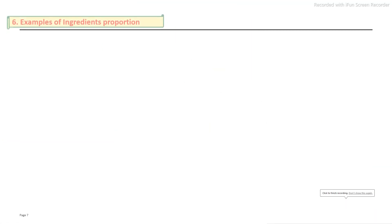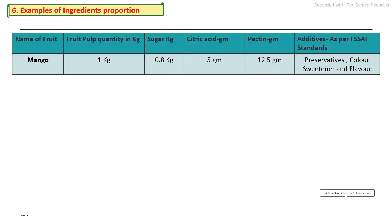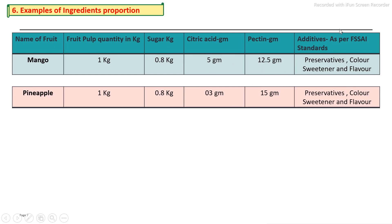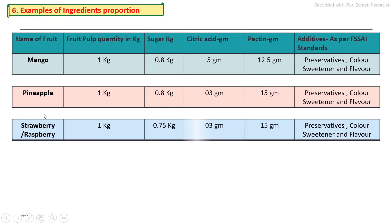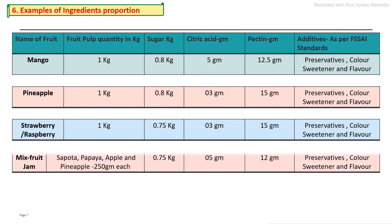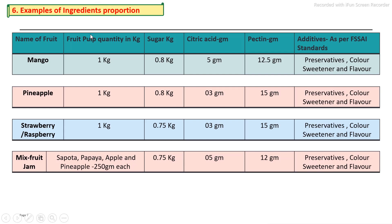The proportion of ingredients used for the jam production process — these are the examples. In the case of jam: initial fruit pulp quantity is 1 kg, then addition of sugar is 0.8 kg, addition of citric acid is 5 grams, and pectin is 12.5 grams. Other additives are as per regulations. This applies to pineapple, strawberry, raspberry and mixed fruit jam. These are the proportions of the ingredients.